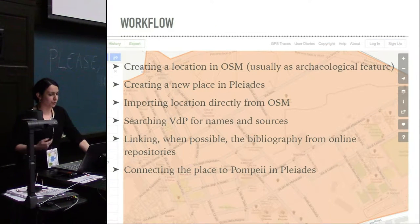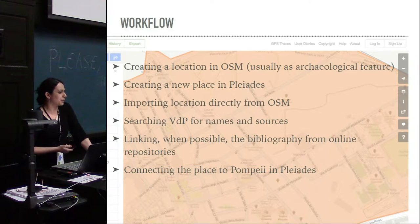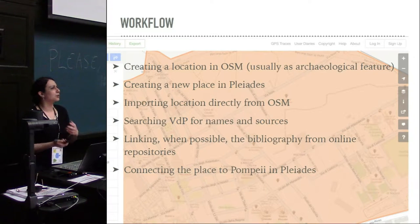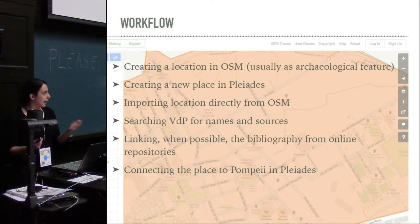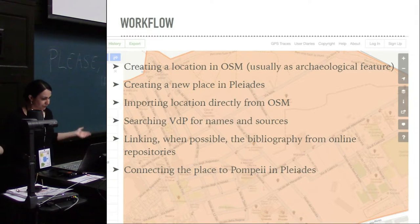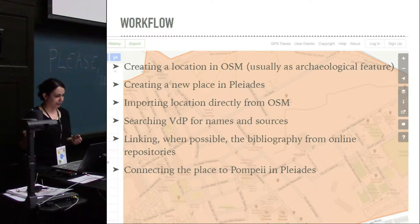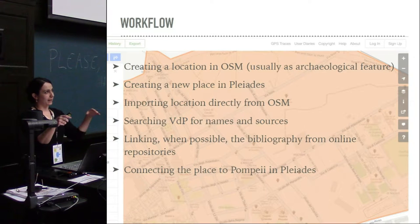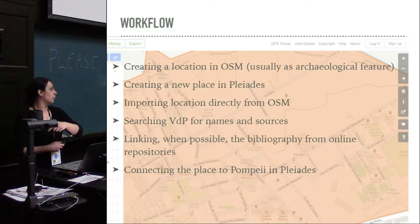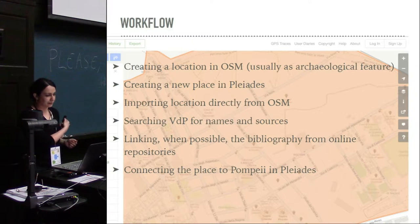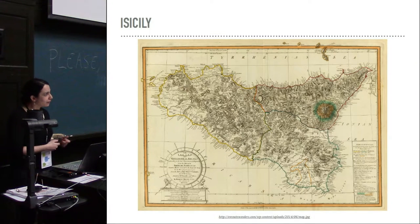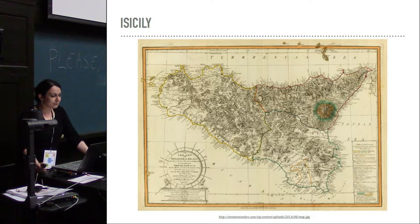My workflow was to create a location in OpenStreetMap, which is also a service to the community as a kind of touristic service — so you go to Pompeii and know where specific houses are. Then I created a new entry in Pleiades and used the direct input from OpenStreetMap option, which works really well and imports the metadata as well. Then I would search Van der Poel for the variant names and when possible link to the bibliography. Then I used the Pleiades connection option to link the building to Pompeii so that when someone looks for Pompeii, they also see the entries for all the specific buildings entered.